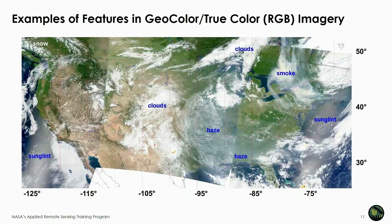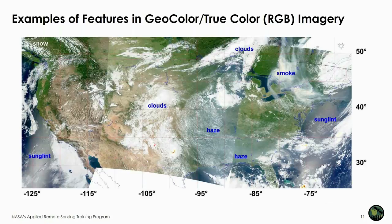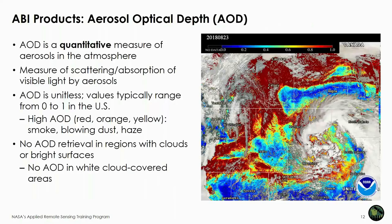RGB stands for red, green, and blue — the spectral bands used to make the imagery. Different features visible in this type of imagery: clouds are bright white, urban haze is a more diffuse feature, smoke is gray and less transparent than haze. Sometimes you'll see an anomaly called sun glint — essentially the reflection of sunlight off water, which is an artifact of the image. If you see shiny brownish areas in a geocolor or true color image, that's due to sun glint.